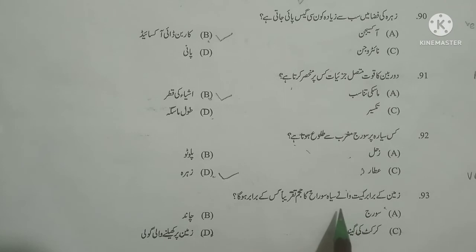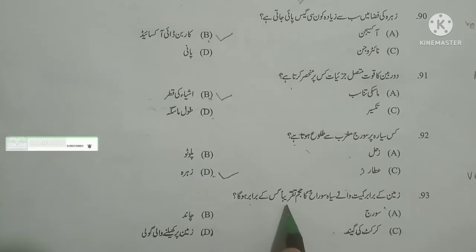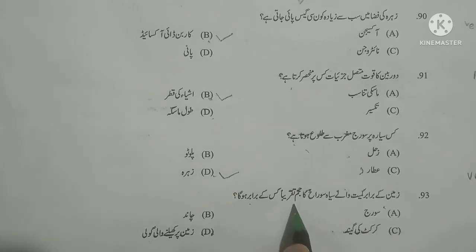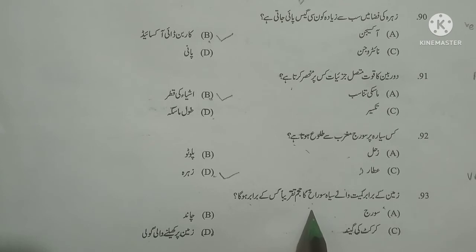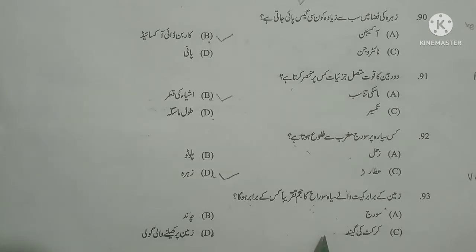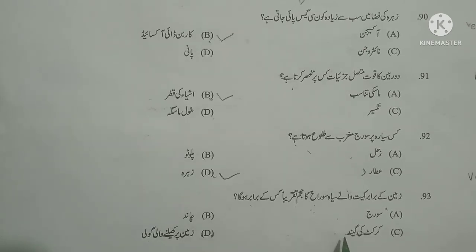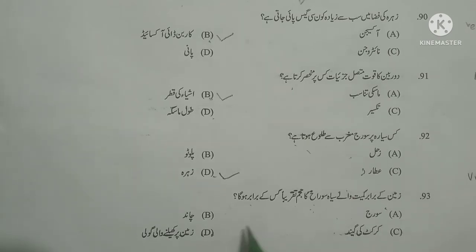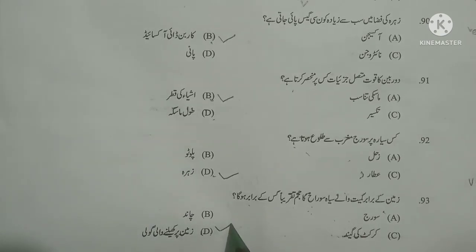Next question: Zameen ke beraber kimiat wale siyaa suraak ka hazm taqriban kiske beraber hoga? Here hazm means volume/size. What size would a black hole be if its mass equals the mass of the earth? As you know, if the mass of a black hole equals the mass of the earth, its size would equal the size of a coin or glass marble. Options: suraj (sun) incorrect, chand (moon) incorrect, cricket ball incorrect — zameen par khelne wale gole, size of a glass marble on earth, is correct.